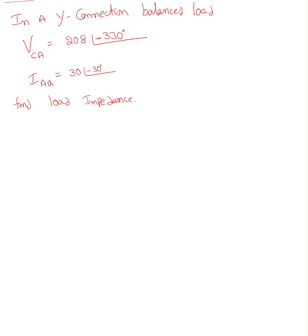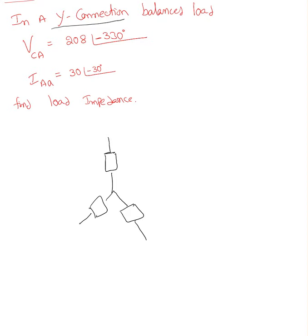Here is the next example. In this example, he gave us information. It's a Y-connected load, delta connection, balanced load. VCA equal to 208 at an angle of minus 330 degrees. IAA equal to 30 at an angle of minus 30 degrees. Find the load impedance. He clearly mentioned the balanced load — if it is a balanced load, that indicates each branch of that load has the same value of impedance.